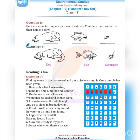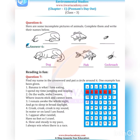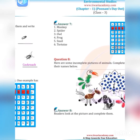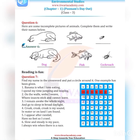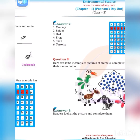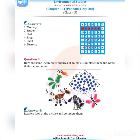Continuing the crossword riddles: I remain awake the whole night and go to sleep in broad daylight — owl. Croak croak is my sound, in water or on land I am found — frog. I appear after rainfall and have no feet, so I crawl — snail. Slow and steady is my pace, I always win the race — tortoise.